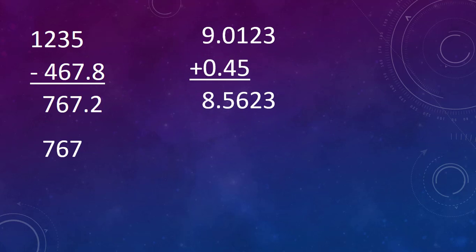In the second problem, we are subtracting 0.45 from 9.0123. A calculator will tell us the answer is 8.5623. Looking at our original numbers, the lowest number of decimal places is 2, so we want to round our answer to two decimal places as well. So we round 8.5623 to 8.56.